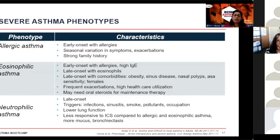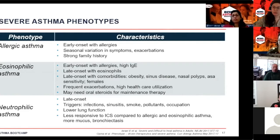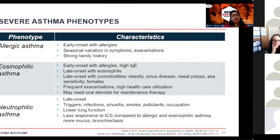The allergic asthma phenotype: these patients typically have early onset of asthma, perhaps in childhood or as teens. They have a lot of allergies, often have seasonal variations in their symptoms — getting worse in the spring or fall — and demonstrate a strong family history.